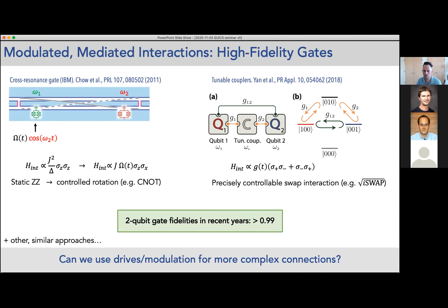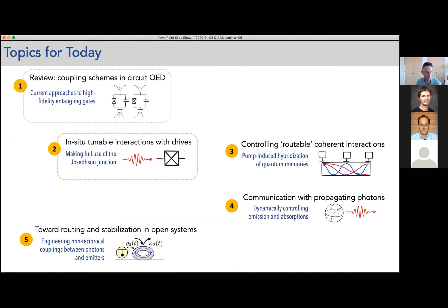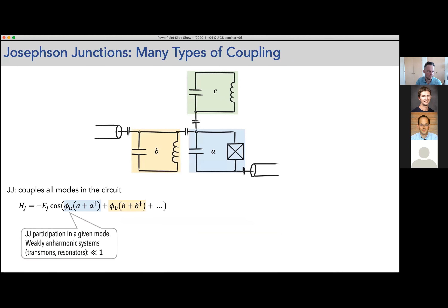The question is now: can we take this idea of applying drives or modulating interactions for more complex purposes — in particular, can we have qubits interact not only with their neighbors but with all sorts of other things? To address that, I'm going to talk about how to in-situ enable or disable interactions by looking more deeply at the Hamiltonian of the system.